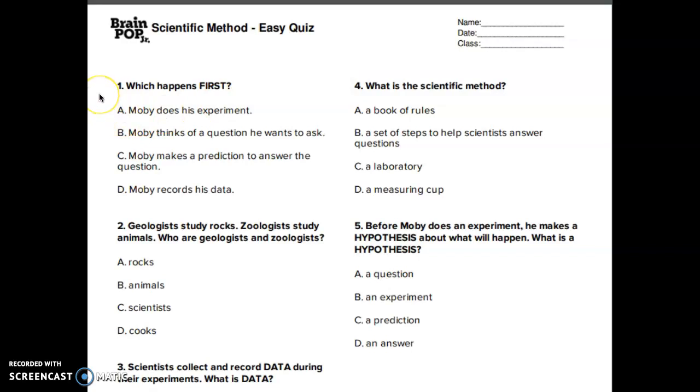Question 1. Which happens first? A. Moby does his experiment. B. Moby thinks of a question he wants to ask. C. Moby makes a prediction to answer the question. D. Moby records his data. Circle your answer.